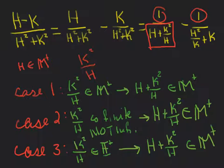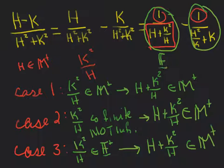So that means this first fraction is 1 divided by an infinite number, which means it's an infinitesimal. The same argument applies to the second term — it is also 1 divided by an infinite number. So both terms are infinitesimals individually, and when we take their difference, we get an infinitesimal. Therefore h minus k divided by h squared plus k squared is always an infinitesimal.